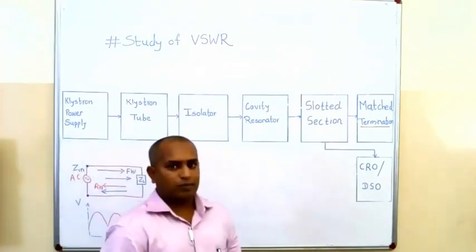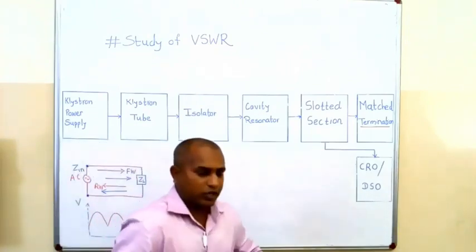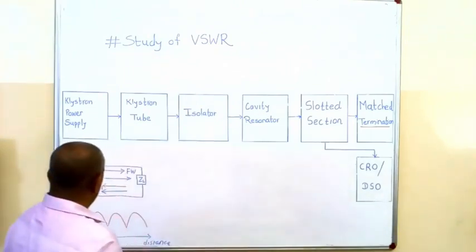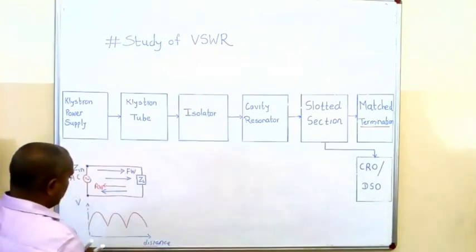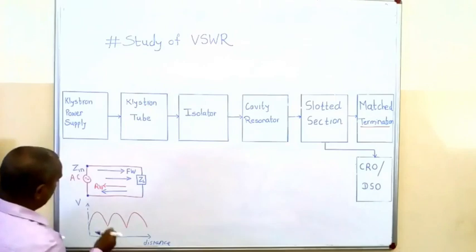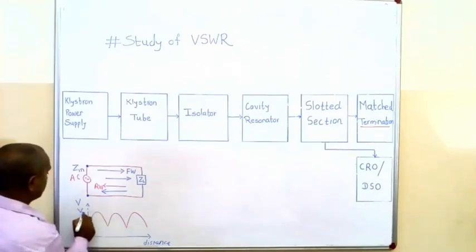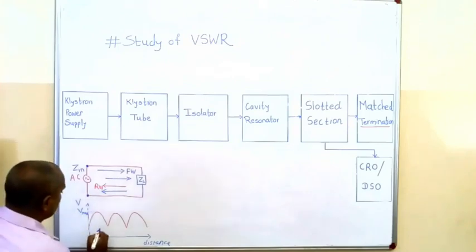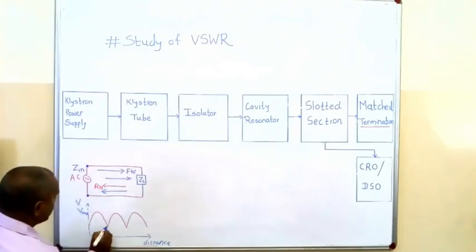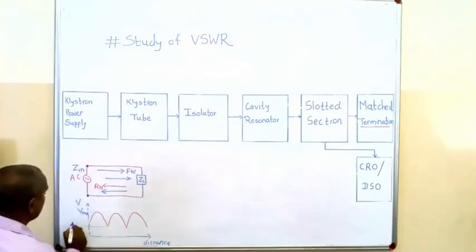If we measure some voltage across this waveguide and take a graph — with distance of your waveguide on one axis and magnitude of voltage on the other — and draw the voltage standing wave on this waveguide, it looks like this due to the mismatch. In this, the maximum voltage is known as Vmax and the minimum voltage is known as Vmin.